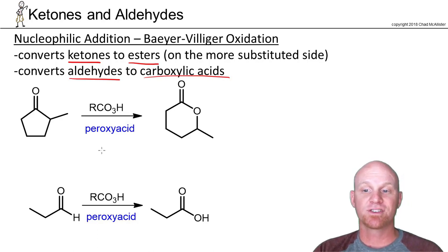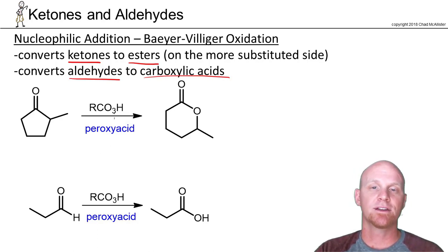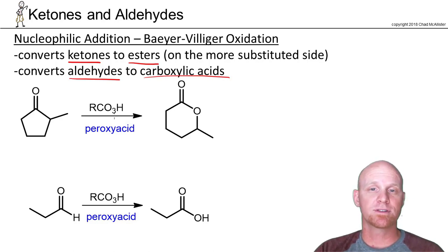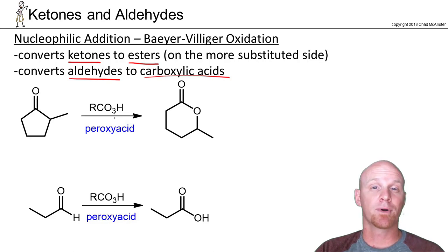The reagent here is just a peroxy acid, which you might write as RCO3H. You might remember that MCPBA is one of the most common — probably the most common — peroxy acid, or sometimes just called peracid for short.